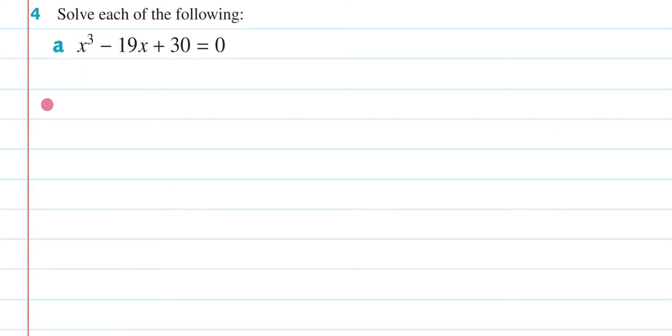So when we're factorizing a cubic, our first step is using our factor theorem, which tells us we need to keep subbing in numbers until we get zero out. Now we don't have to just sub in any random number, we're just going to consider factors of 30. So let's just list out some factors of 30. Factors of 30. What are they? So it's going to be plus or minus 1, plus or minus 2, plus or minus 3, plus or minus 5, plus or minus 10, plus or minus 15, or plus or minus 30. So we're going to sub in these numbers until we get zero out, and then we'll found our first factor.